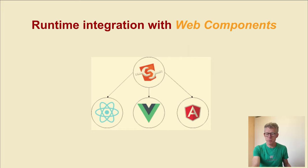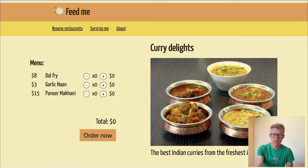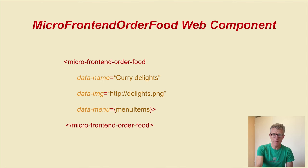Web components is a technique to build micro frontends. We want to build this screen with a web component — micro-frontend-order-food is the name of the web component. You see here I've made a tag called micro-frontend-order-food with three parameters: the name, the image (lights.png), and menu items you want to order. For simplicity, I'll only work with the name and image to show how you make a web component.